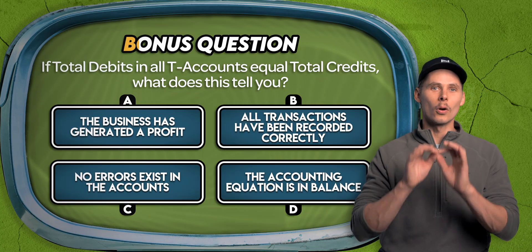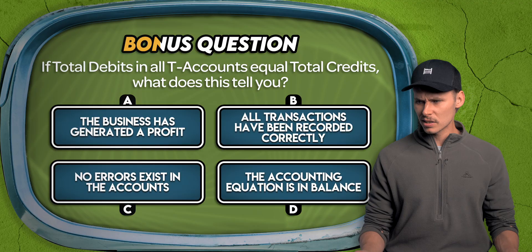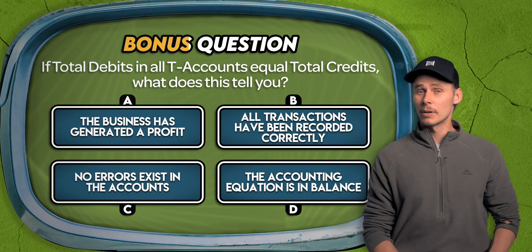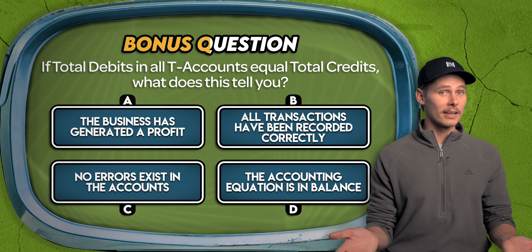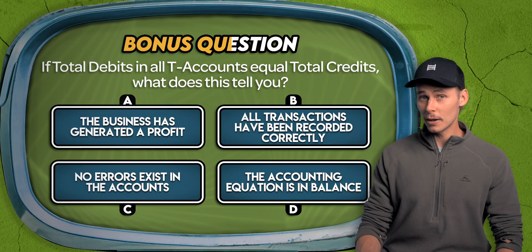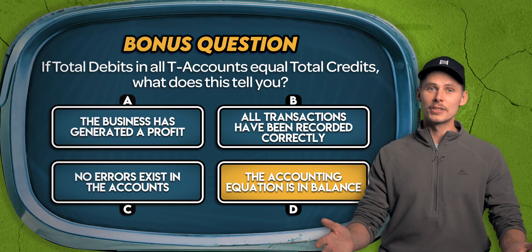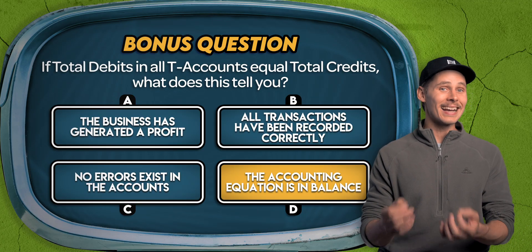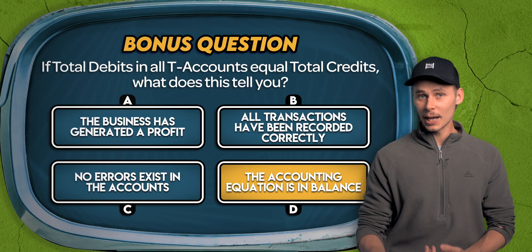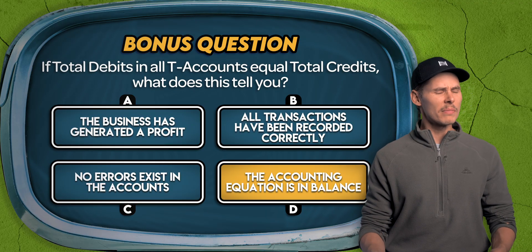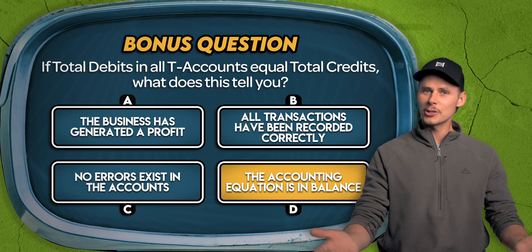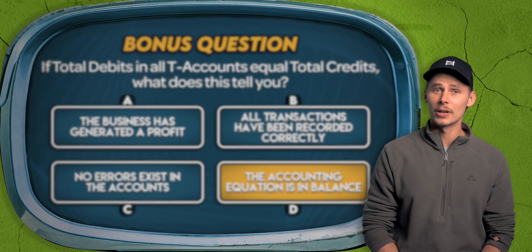Bonus question. If total debits in all T-accounts equal total credits, what does this tell you? That the business has generated a profit? That all transactions have been recorded correctly? That no errors exist in the accounts? Or that the accounting equation is in balance? The answer is D. When total debits equal total credits, it shows that the business's assets are equal to its liabilities plus equity — meaning the accounting equation is balanced, though errors may still exist. How did you go? Drop your score in the comments. You can grab my T-accounts cheat sheet using the link right here. Don't forget to subscribe for more accounting quizzes and tutorials. See you soon!